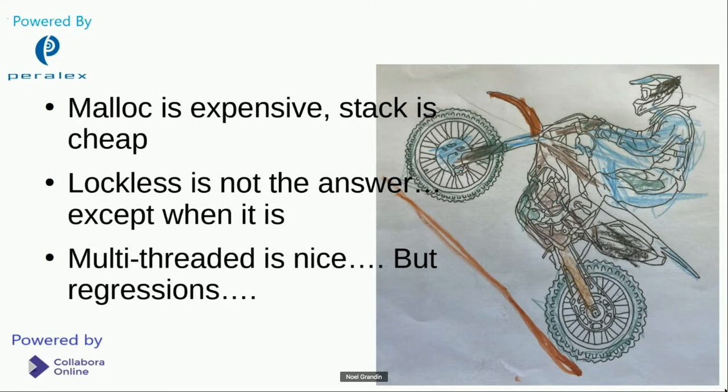Now, one possible option here would be switching to a fancier allocator, like jemalloc or one of the other mallocs or other things floating around. But when you're dealing with an application as large as LibreOffice, that is not an ideal answer because there's just so much magic going on down in the libraries that we use that switching out malloc implementations is not ideal.